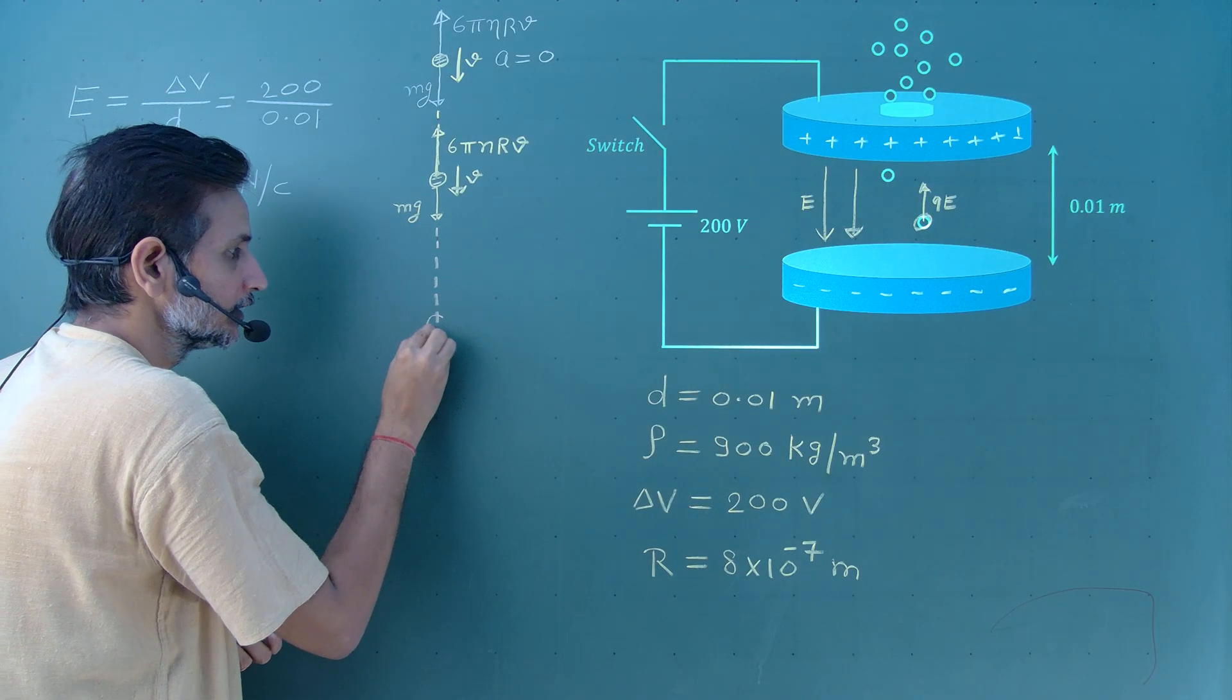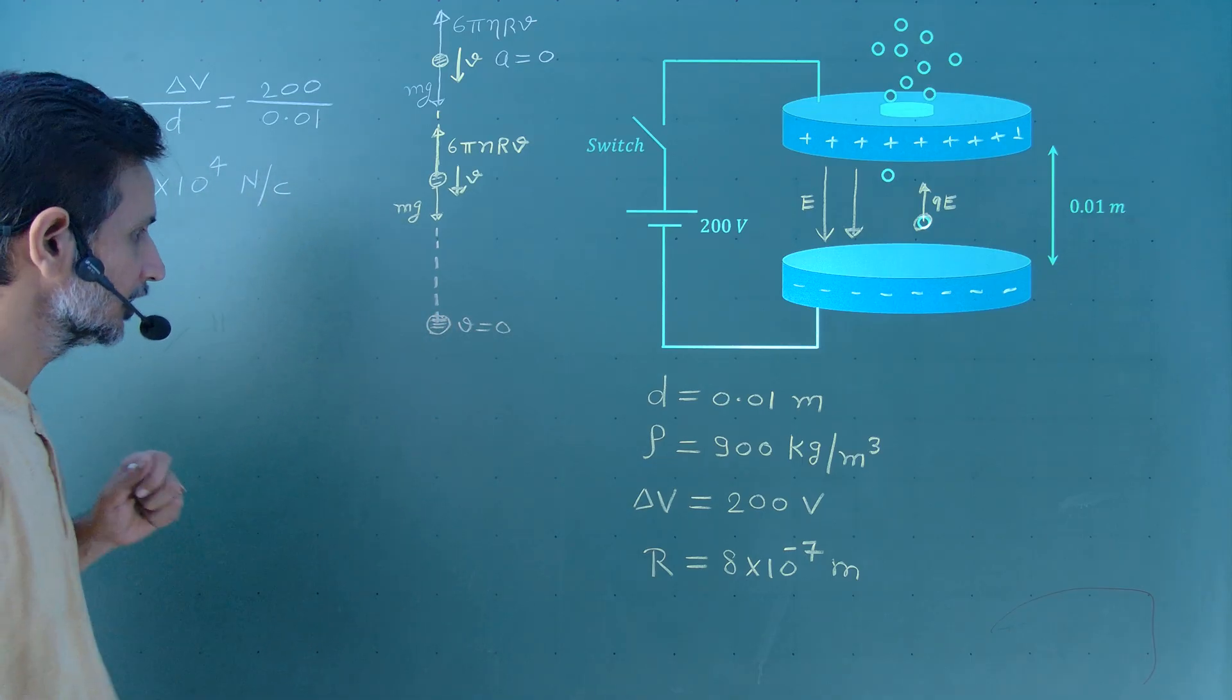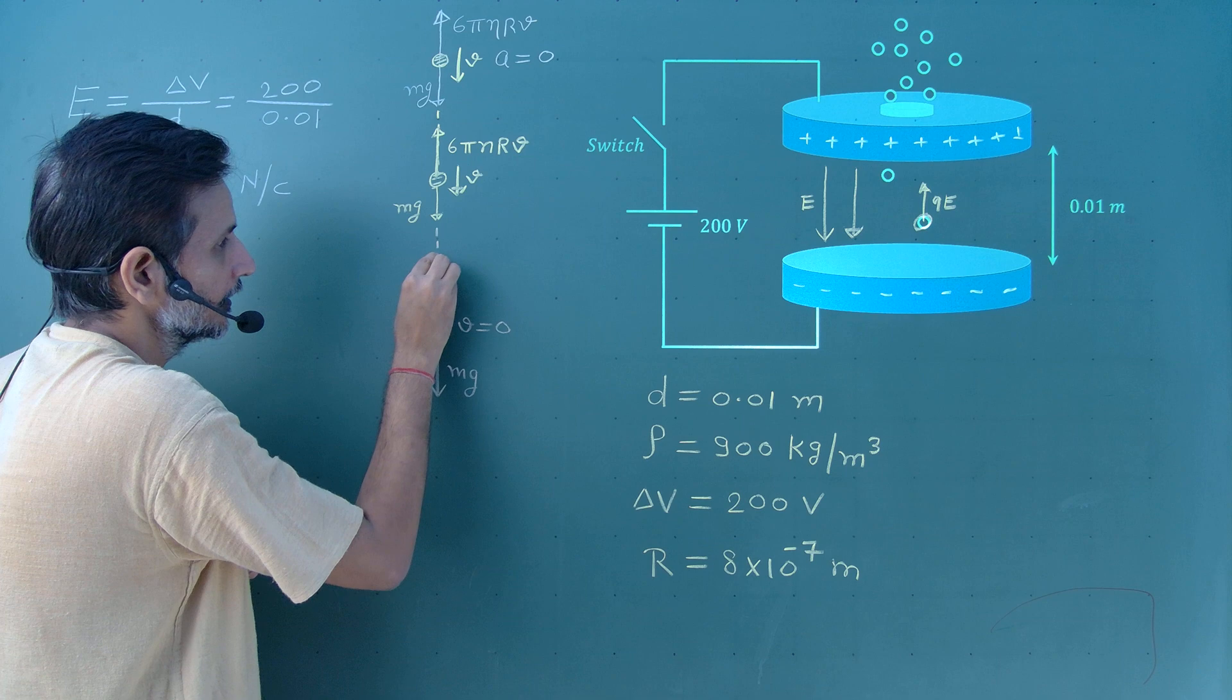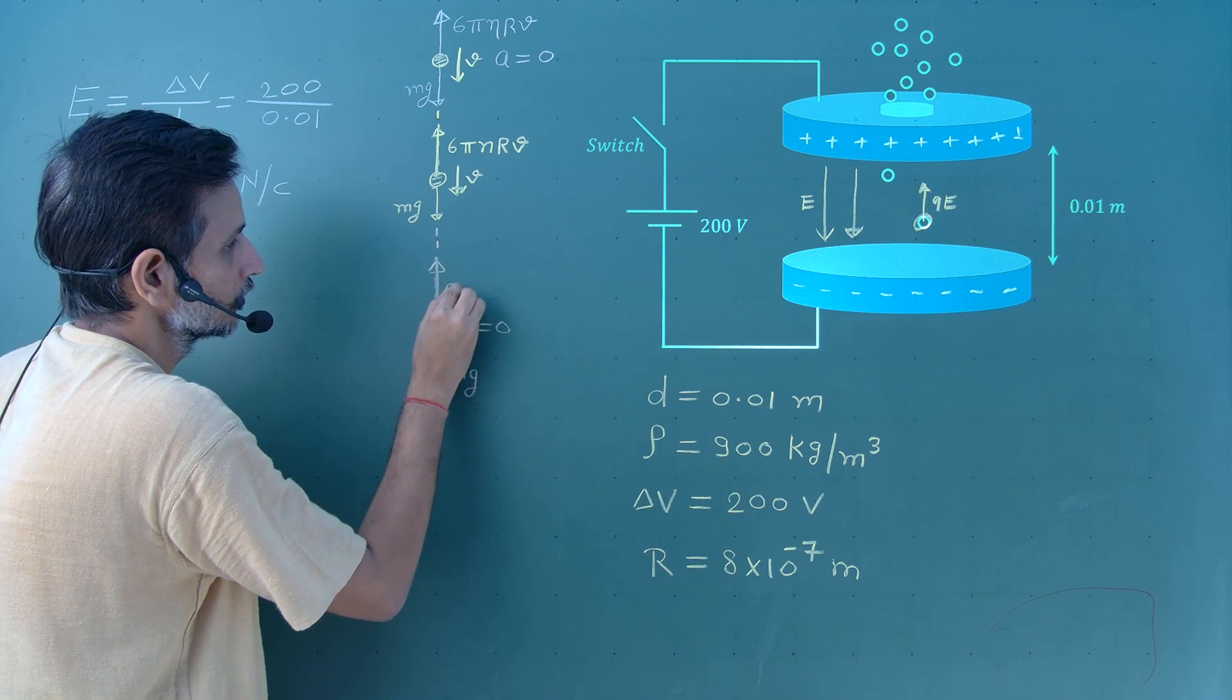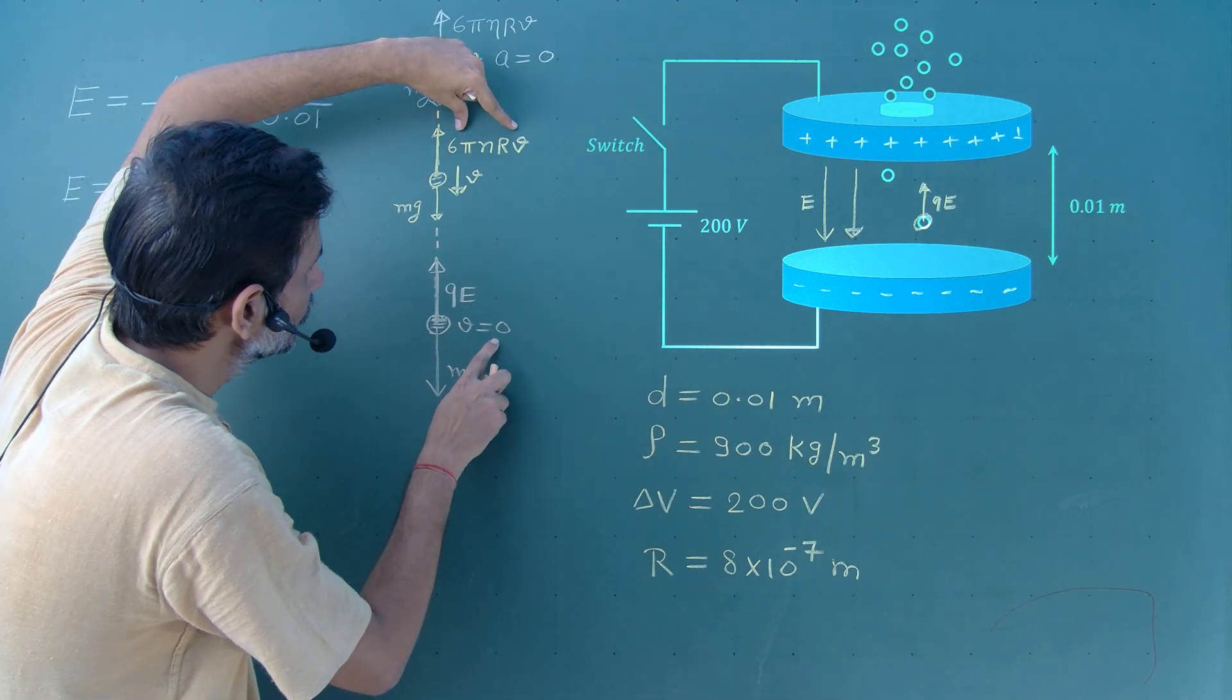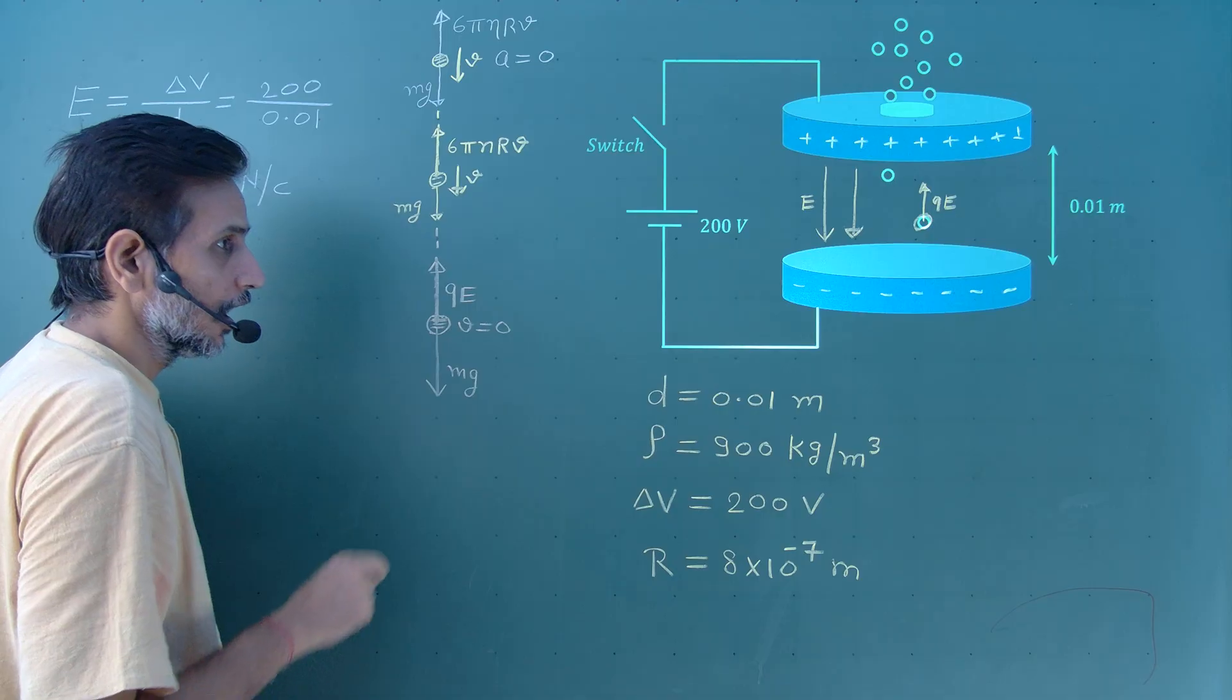When this V becomes 0, what are the forces acting? In downward direction, Mg will act. And in upward direction, electrostatic force Q into E will act. What about the Stokes force, viscous force? Due to V equal to 0, this force is 0. So, only two forces will act.